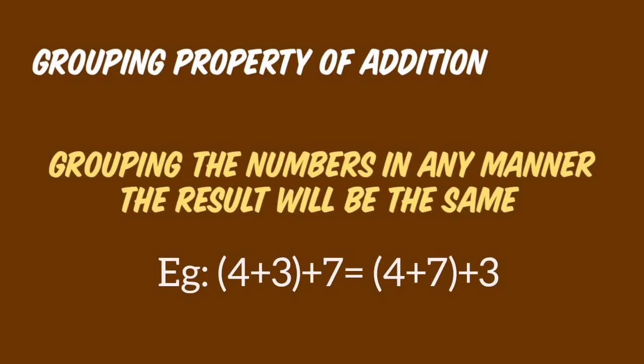For example, 4 plus 3 plus 7: if we do (4 plus 3) plus 7, it is equal to 4 plus (7 plus 3) — both are the same.